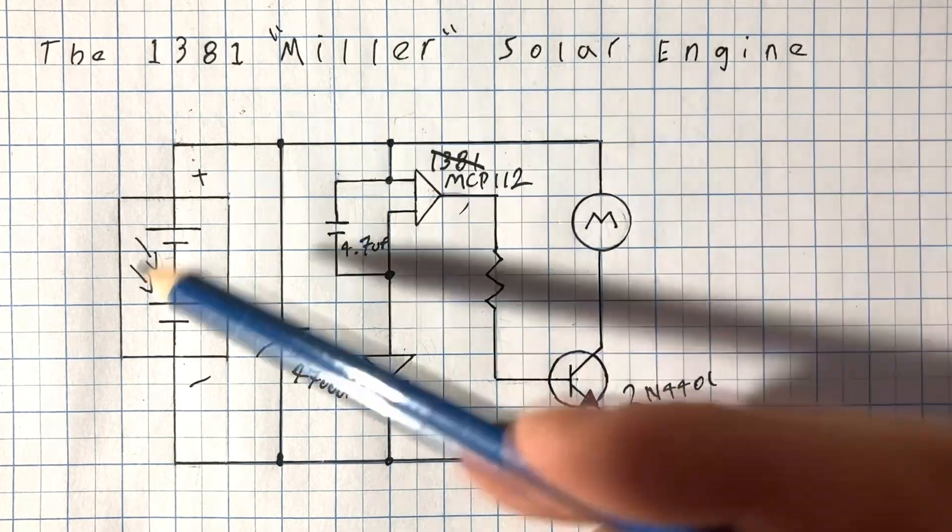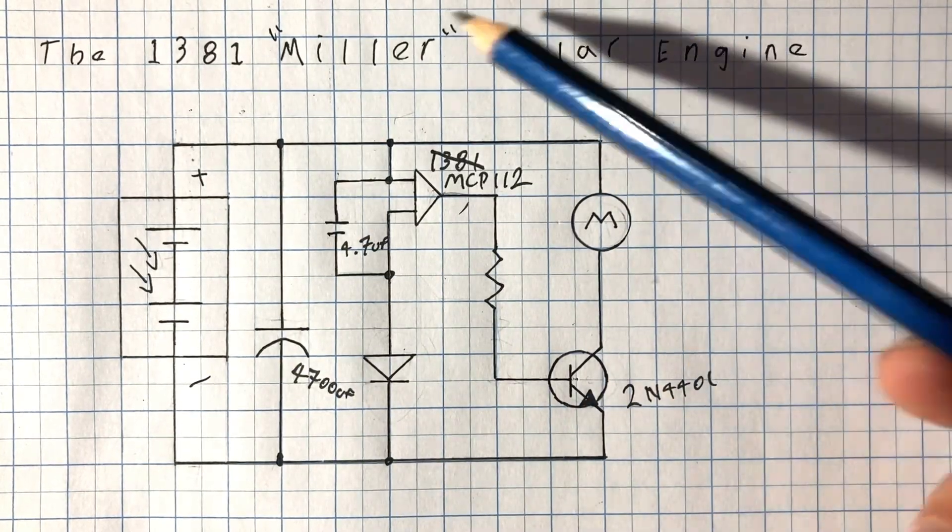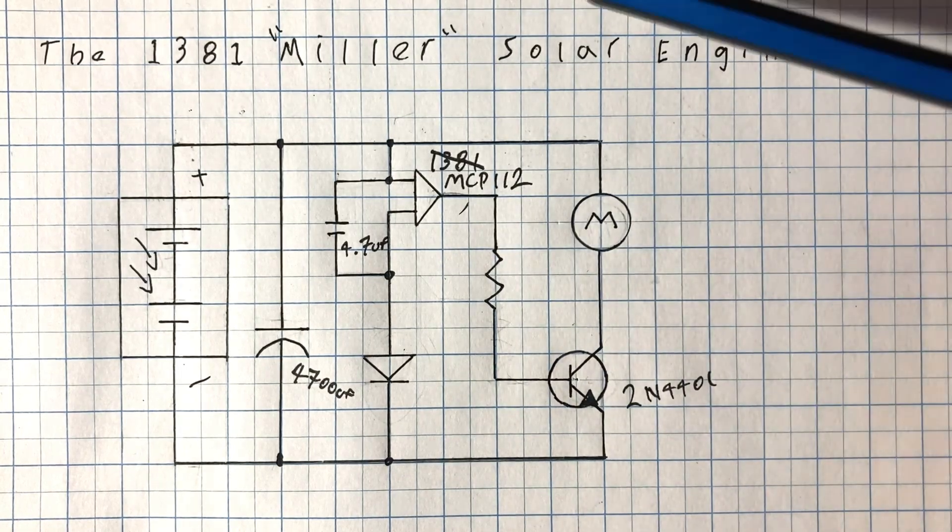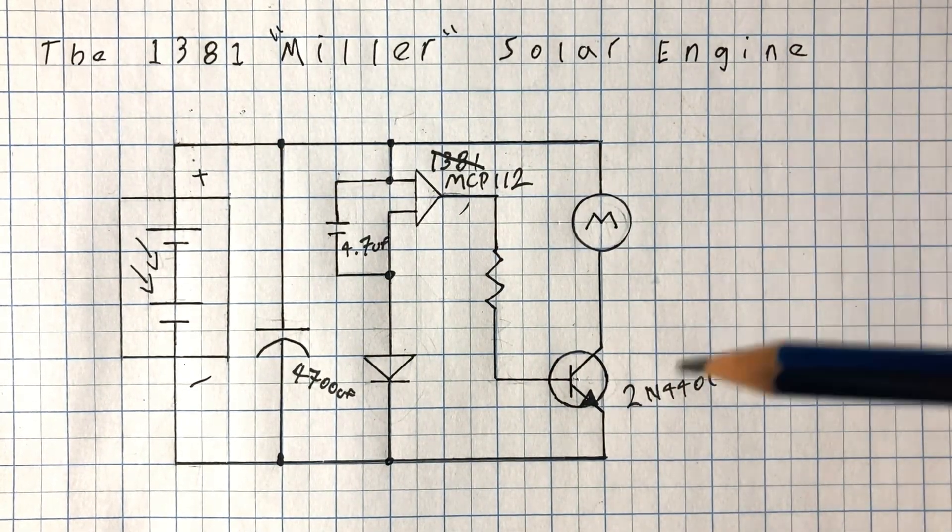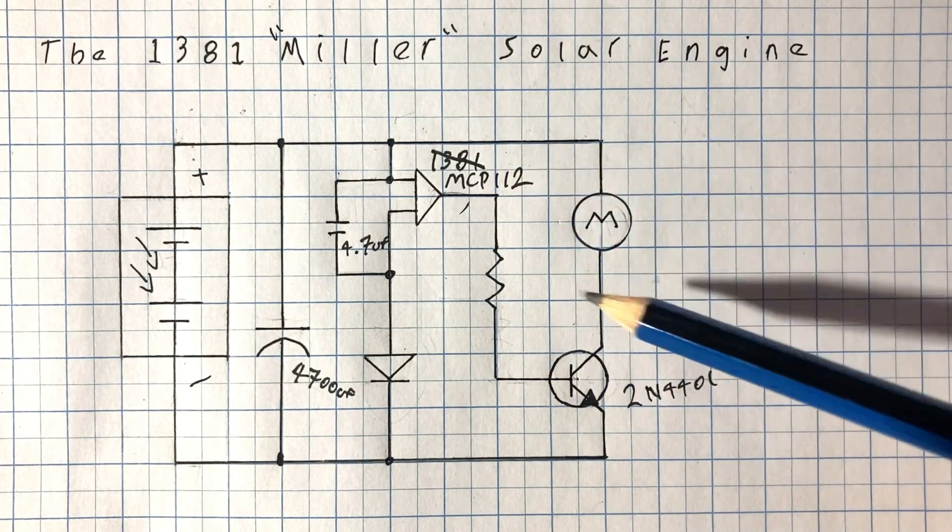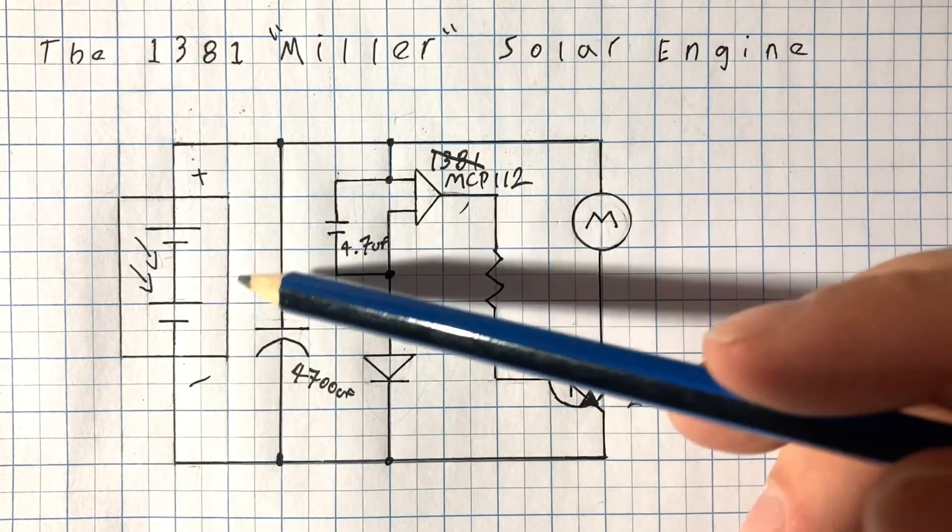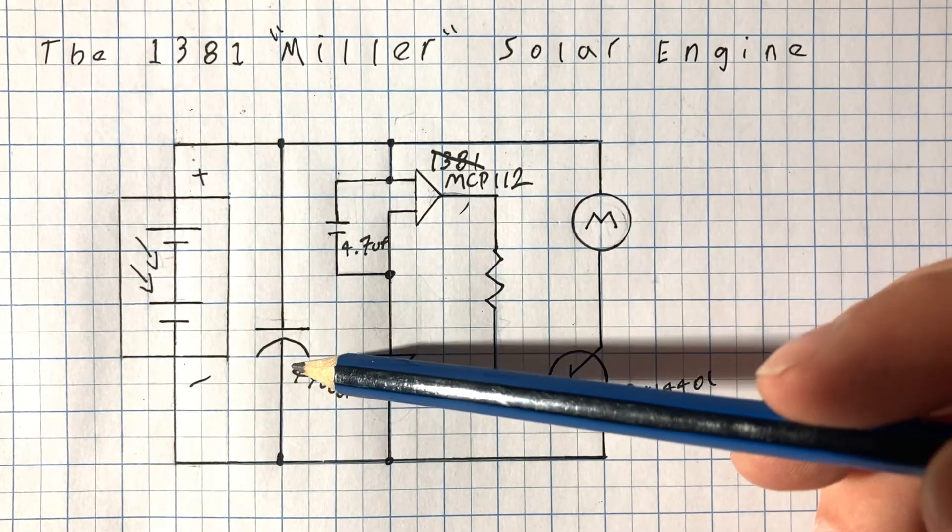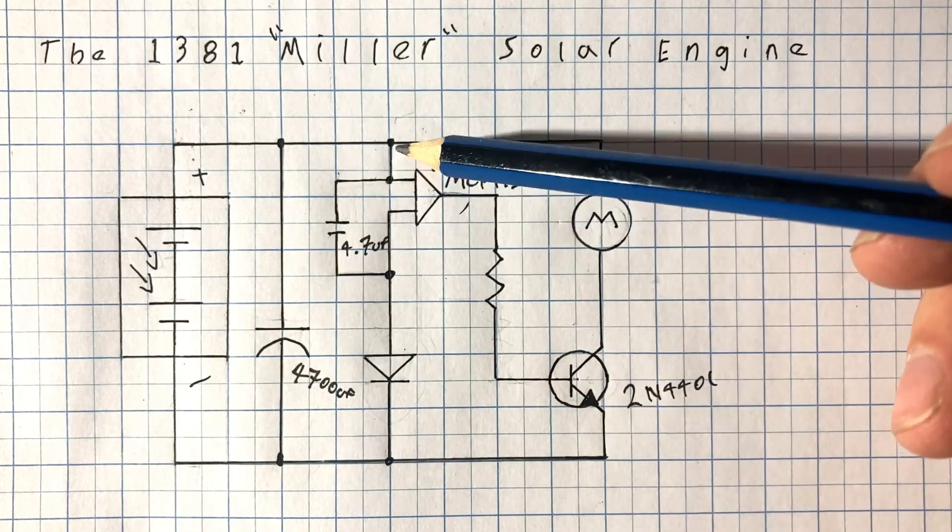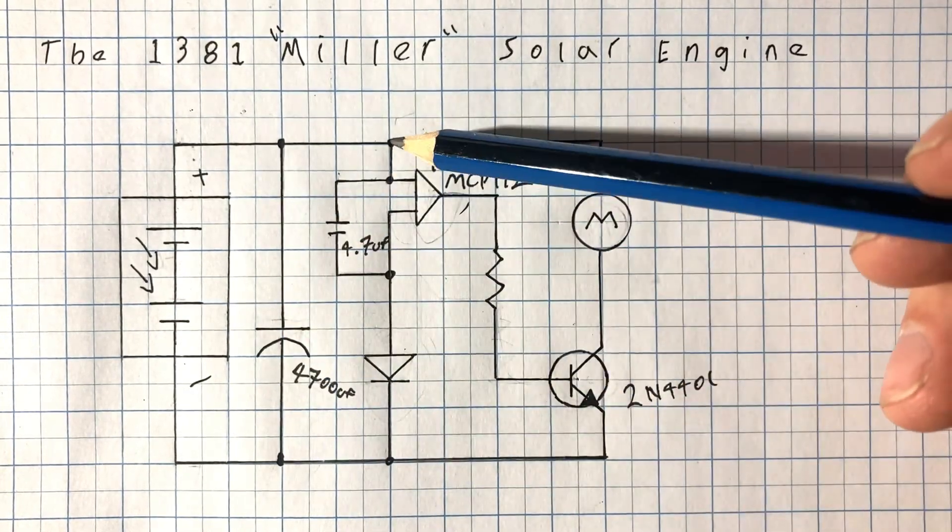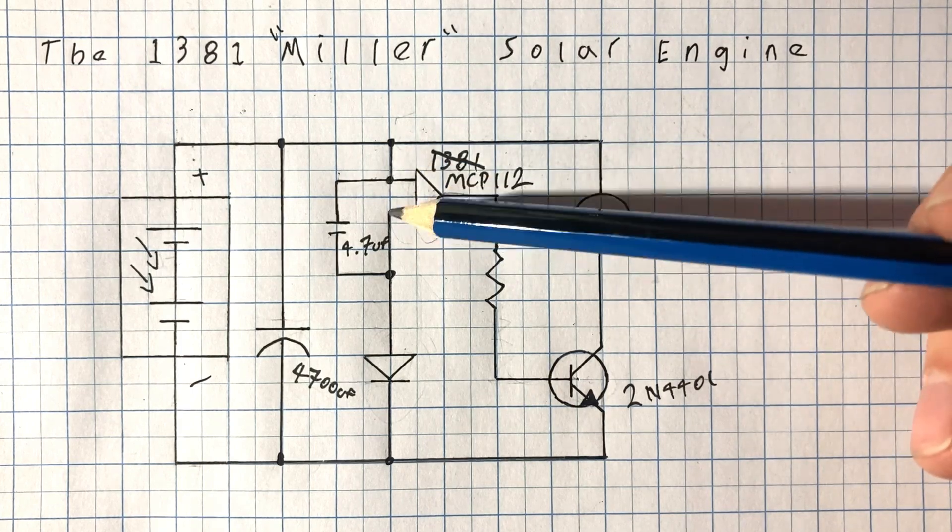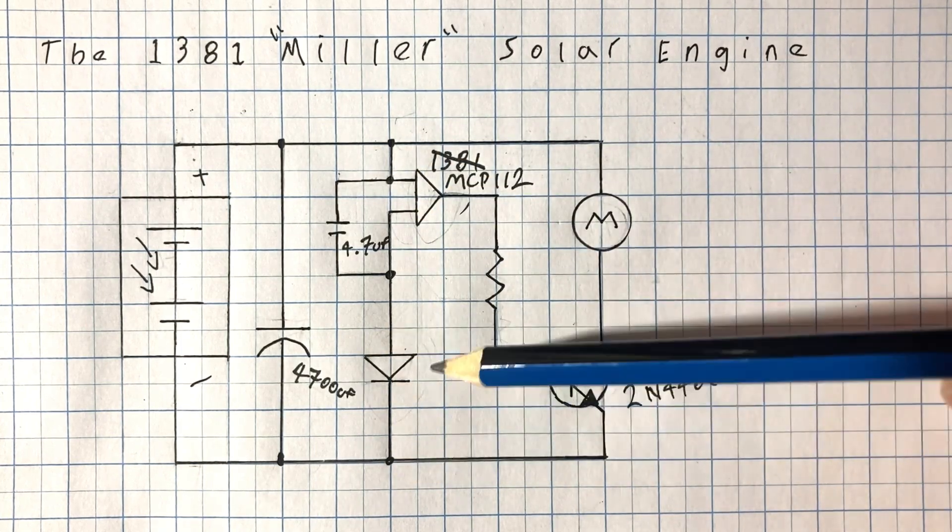So here we can see probably the most common utilization of this little chip here. This circuit is called the Miller solar engine. I'm guessing named after the guy who invented it but let's run through how it works. So we have a solar cell here and that charges the main capacitor. As this charges up the little voltage supervisor will see the main capacitor voltage through the positive which is directly connected and through the negative which is connected through a diode here.